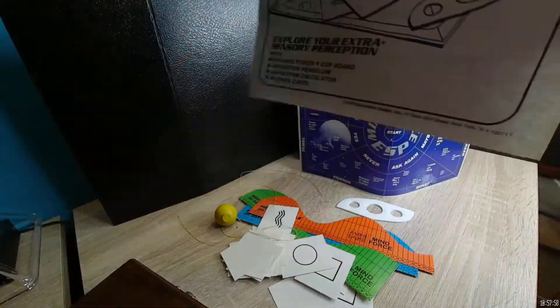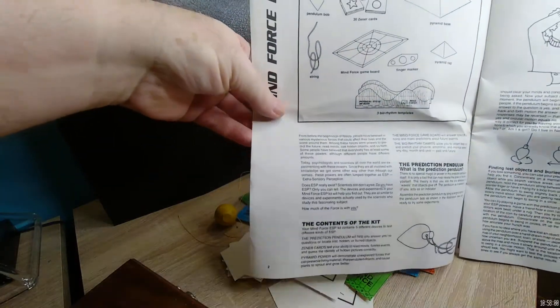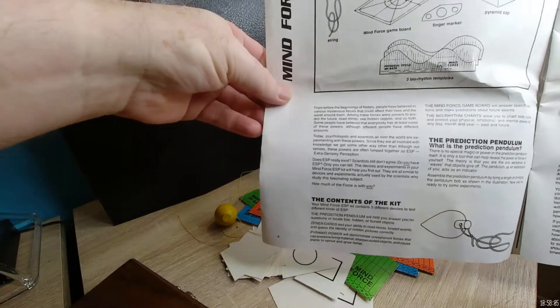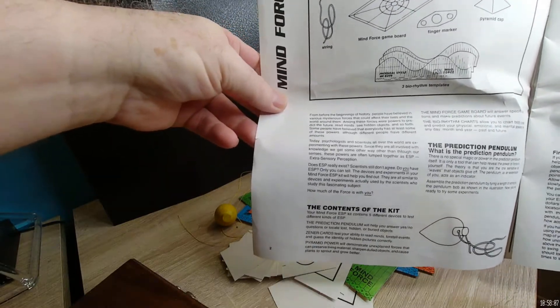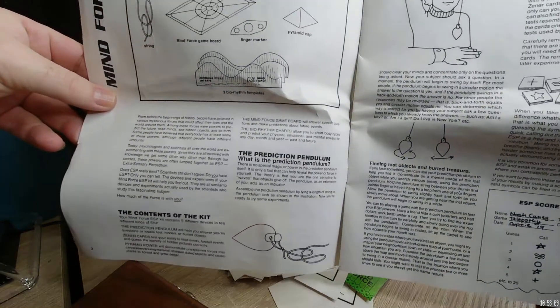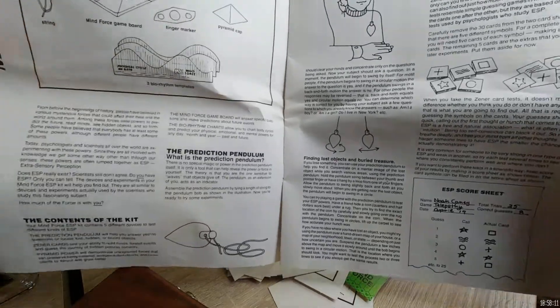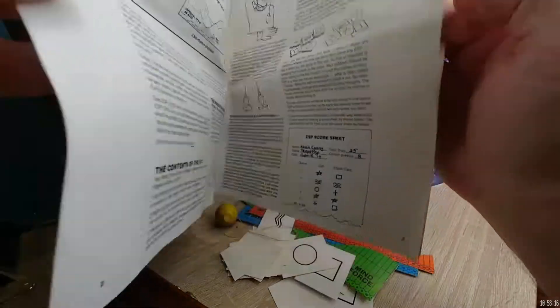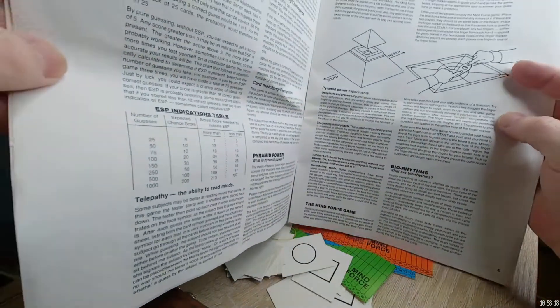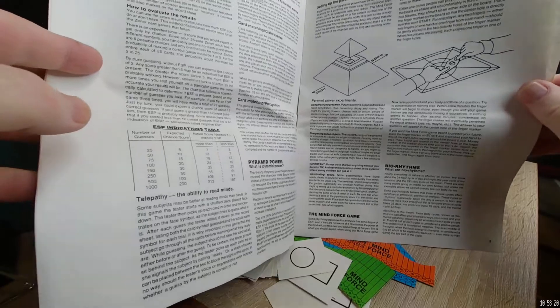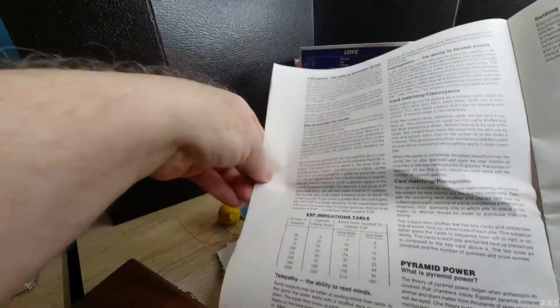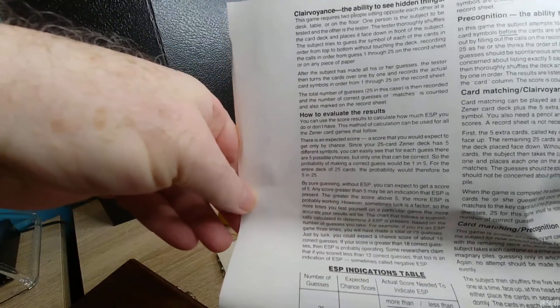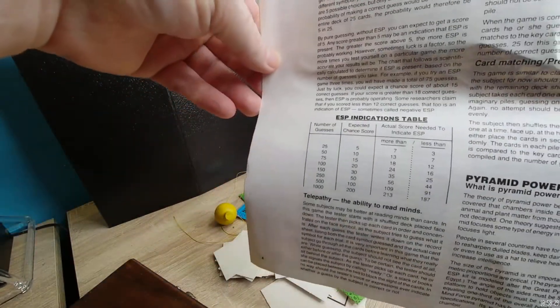Here are the instructions. It shows you what's in the kit, how to use a pendulum, Zener cards and tells you how to use them and how to score. It's a whole little training booklet. That's what I like about these kind of tools - it's not just giving you something to work with but they give you a whole course on how to use all these things properly.